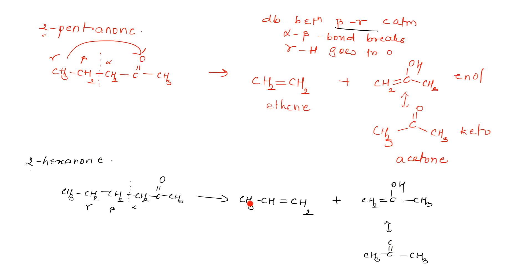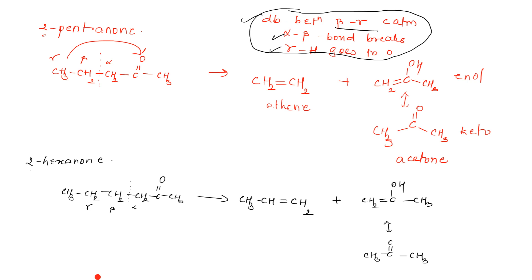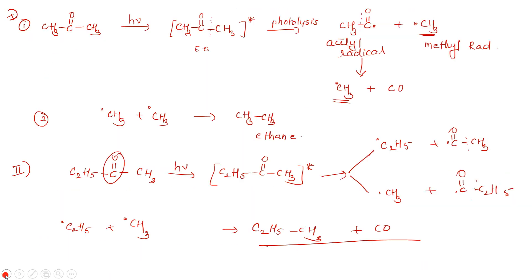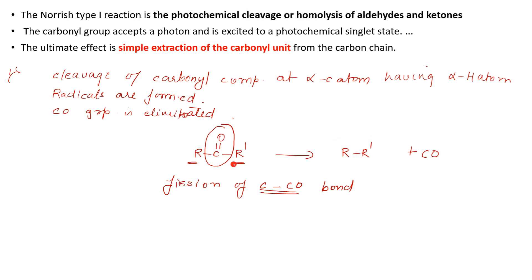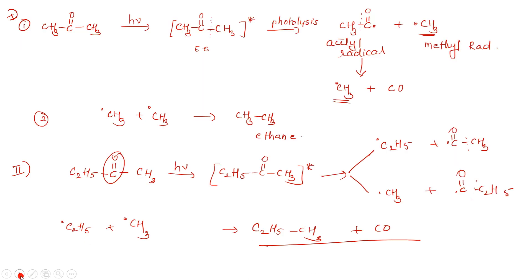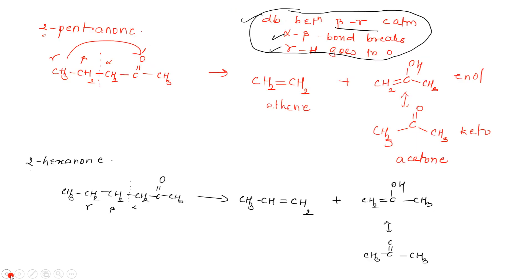Always remember these steps for Norrish 2: gamma hydrogen abstraction, double bond formed between beta and gamma carbon, and alpha-beta bond breaks. For Norrish 1: just remove the C=O, and the ketones are converted to hydrocarbons like alkanes (depending on the structure). I hope you have understood this. I will make a few more videos on the other reactions of this chapter on photochemistry. Thank you for watching.